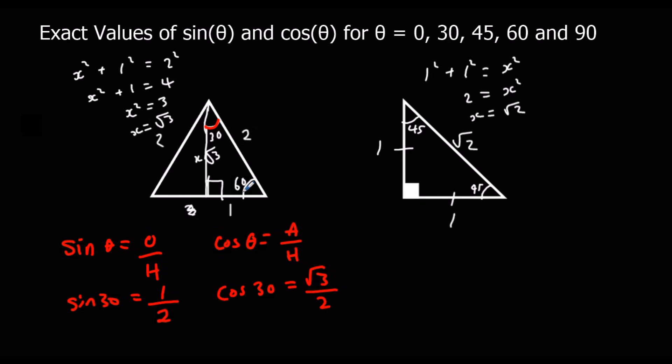To do 60, we look at this angle instead. So sin 60 equals opposite over hypotenuse. So opposite is now root 3. Hypotenuse is 2. And cos 60, adjacent. So the adjacent one is now 1 over hypotenuse, which is 2. So here we've got the values of sin 30, cos 30, sin 60, and cos 60.